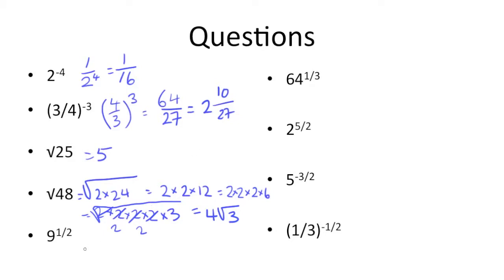Next up, we have 9 to the 1/2 exponent. When we talked about fractional exponents, the bottom number in the fractional exponent tells you what root you're taking the base to, and since it's 2, it's the square root of 9. And since 1 is the top of the fractional exponent, it's to the first power, so we can ignore that. We get the square root of 9, which simplifies to 3, since 9 is a perfect square of 3 squared.